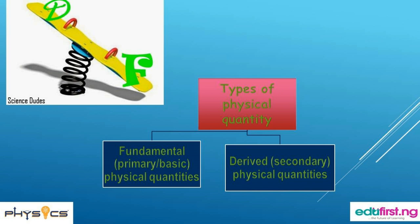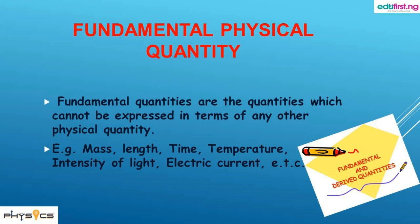We have fundamental physical quantity and derived physical quantities. Let's take them one after the other. Fundamental physical quantities are quantities which cannot be expressed in terms of any other physical quantity.